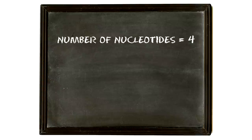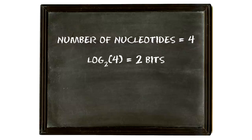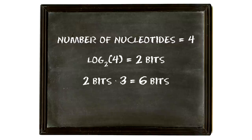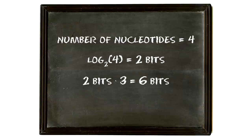Let's do the math to see how much information was created by this single mutation. There are 4 nucleotides in total. To see how much information they carry, we use the formula from Shannon theory: log base 2 of the number of possibilities — in this case 4 — which equals 2 bits. Each amino acid is coded by 3 nucleotides, so that's 6 bits of information for every amino acid. Since the mutation generated a sequence of 392 amino acids, this single mutation event added 2,352 bits of information to the bacteria's genome — 2,352 bits of information that absolutely was not there before!